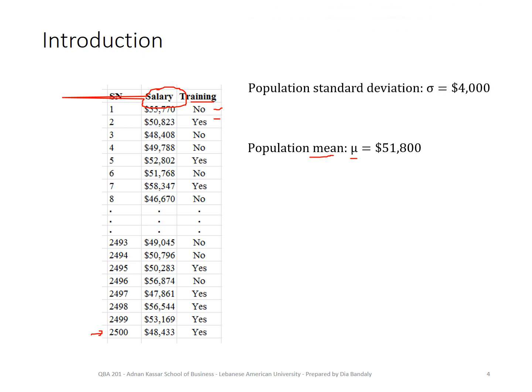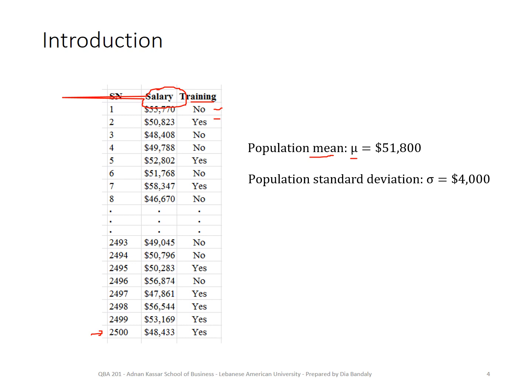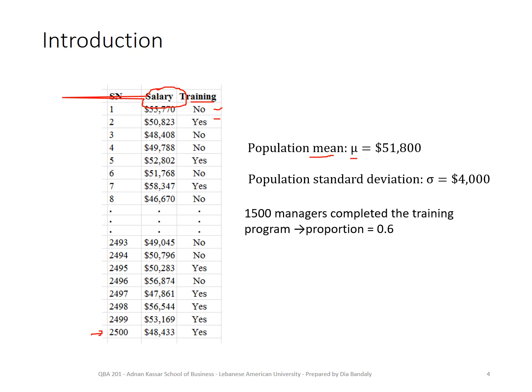He could find the standard deviation: by subtracting the mean from each salary, squaring those differences, summing them up, dividing by n, and taking the square root. We get a standard deviation of $4,000. Finally, to find the proportion of managers who undertook the training, we simply count the rows where we have 'yes' and divide by 2,500. This happened to be 0.6 — so 60% of the managers undertook the training. This is the profile that he was looking for.